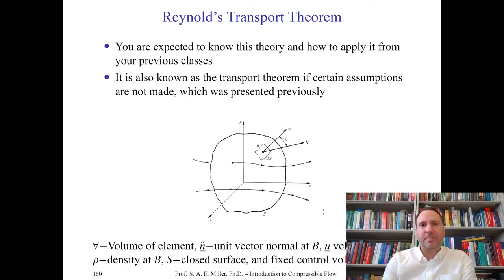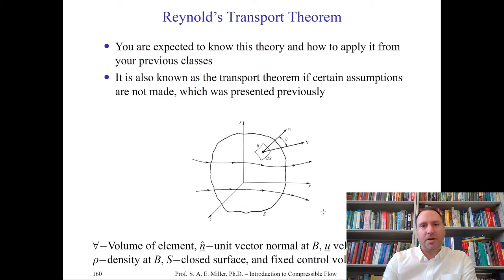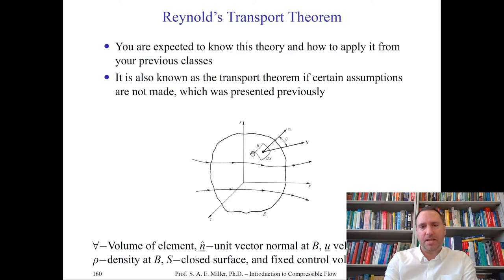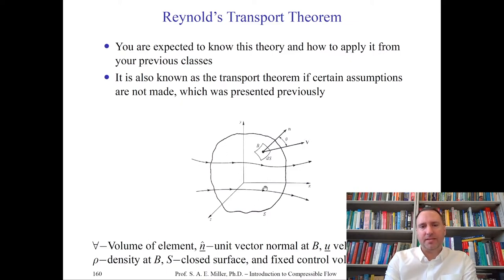Let's turn to Reynolds transport theory, which you should have learned in previous classes in fluid dynamics or thermodynamics. We'll review it and look at the important parts and nomenclature. In the figure, we have a control volume with surface S, a point B on the surface, a differential element dS, and an outward-pointing normal vector n. The coordinate system is Cartesian with x, y, z right-handed. A velocity vector exists everywhere on the surface, and there may be an angle theta between the normal vector and the velocity vector.